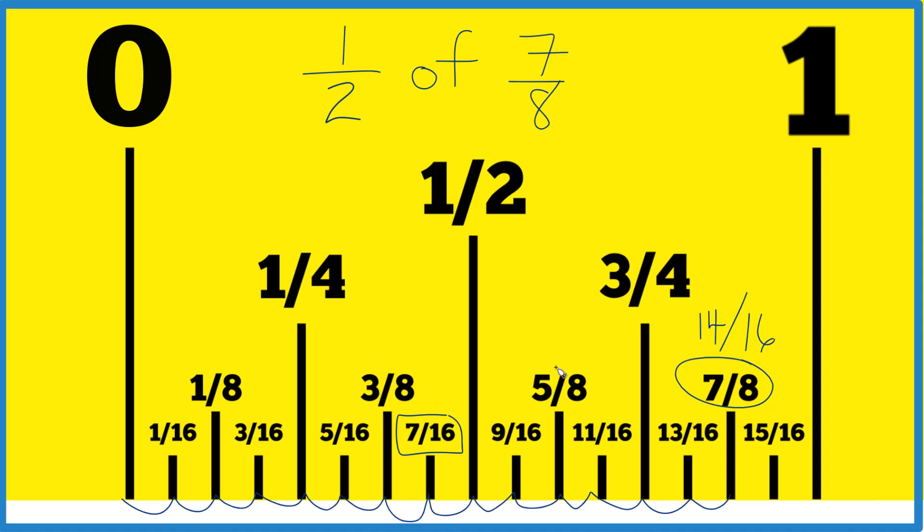Seven sixteenths. So half of seven eighths on our ruler or tape measure here, it's seven sixteenths. Kind of makes sense, we have 14 parts out of 16 and we want to know half of those 14 parts, that's seven sixteenths. That's it, this is Dr. B, thanks for watching.